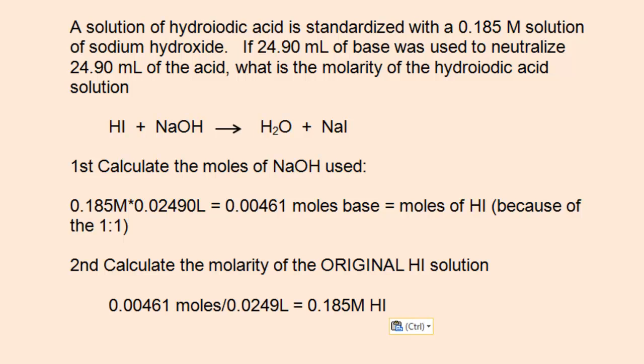Then calculate the molarity of the hydroiotic acid solution. It's important that you use the original volume of the hydroiotic acid solution. So in this case, 0.00461 moles divided by 0.0249 liters, which gives you 0.185 molar hydroiotic acid.